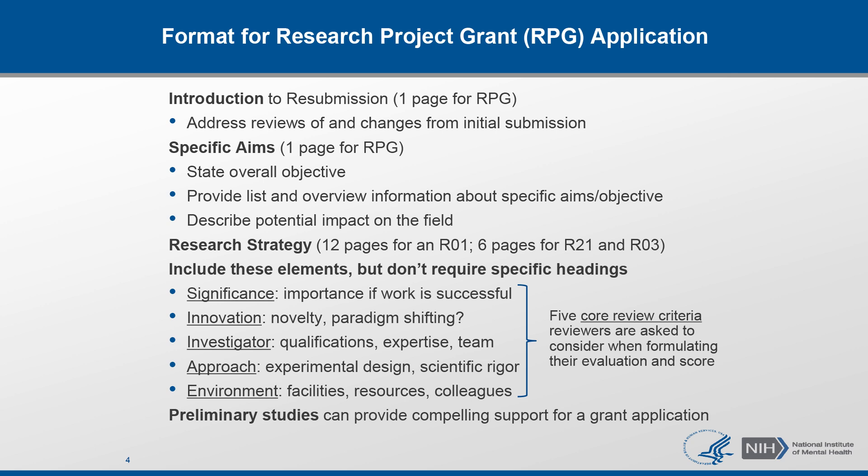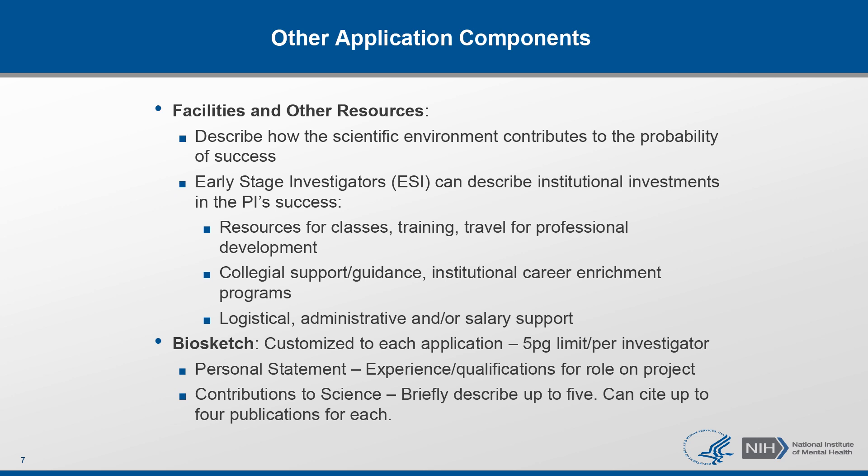There should be a discussion of preliminary studies that are pertinent to the application, as this is important for establishing the likelihood of success for the proposed project. In the facilities and other resources section, you should describe how the scientific environment will contribute to the probability of success — for example, unique features of the scientific environment, unique subject populations, or useful collaborative arrangements. For early stage investigators, you can describe institutional investment in your success, such as resources for classes, collegial support such as career enrichment programs, and logistical support such as administrative management.